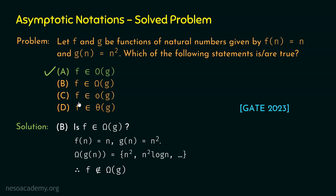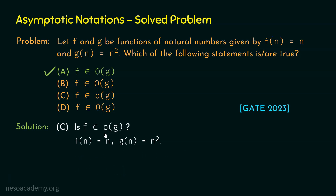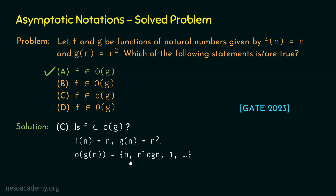Statement C: f belongs to small o of g. In the small o notation, f(n) must be strictly asymptotically less than g(n). So small o of g(n) is the set of all functions strictly less than n², including n, n log n, and 1. Since f(n) = n is strictly less than n², f(n) belongs to small o of g(n). Statement C is correct.